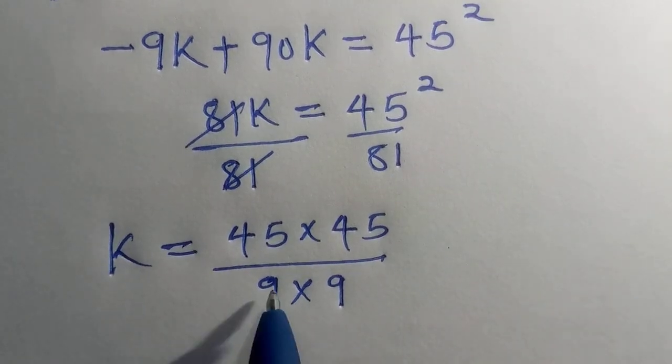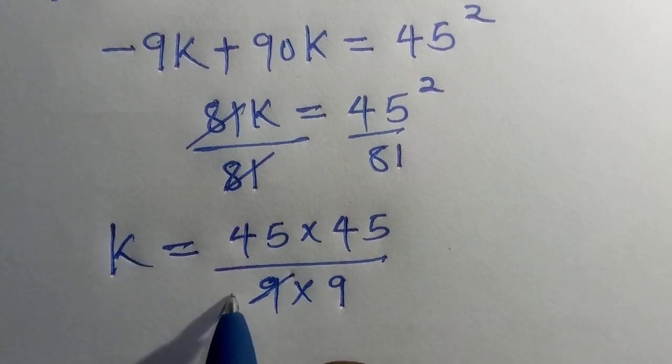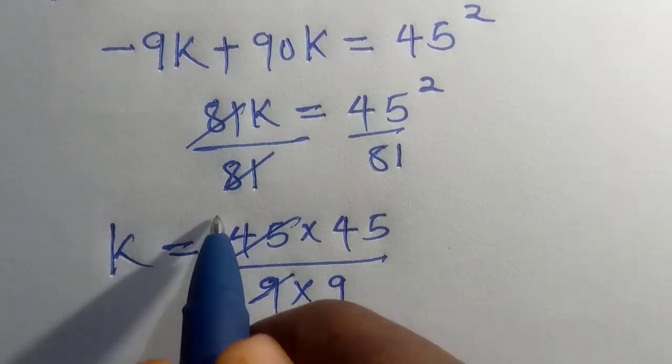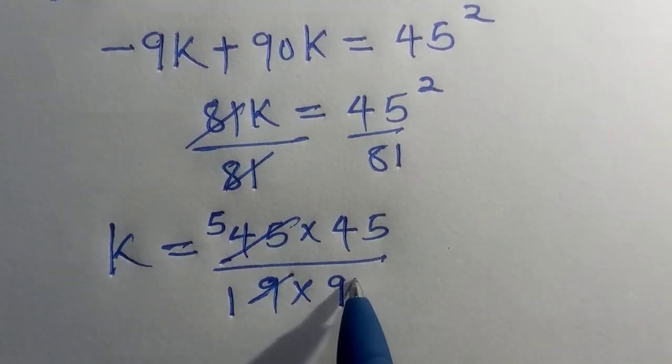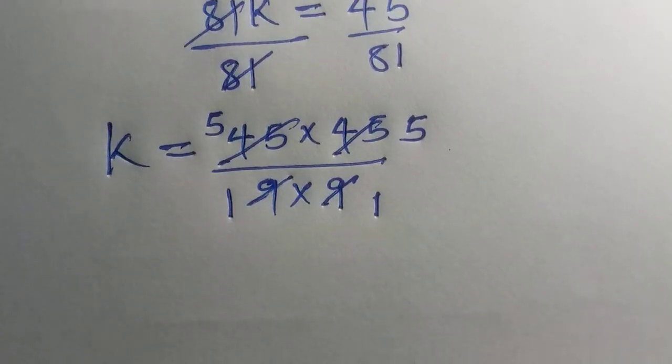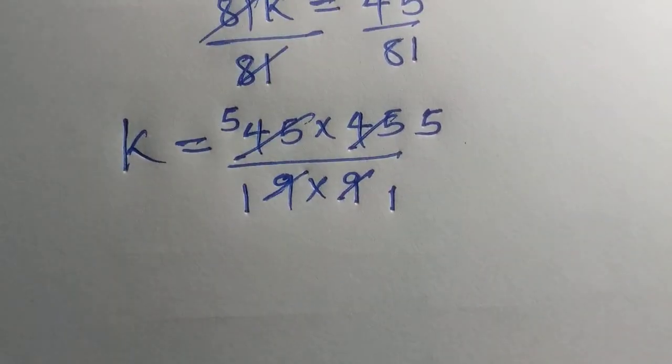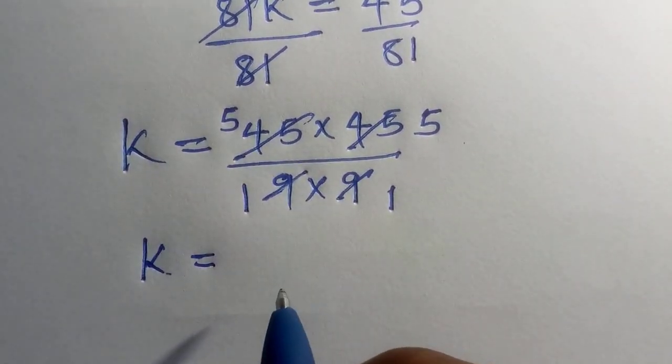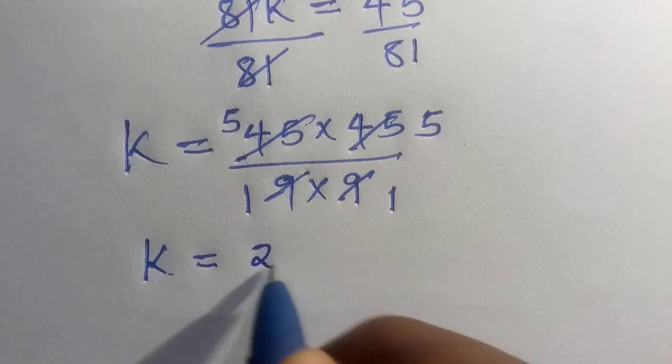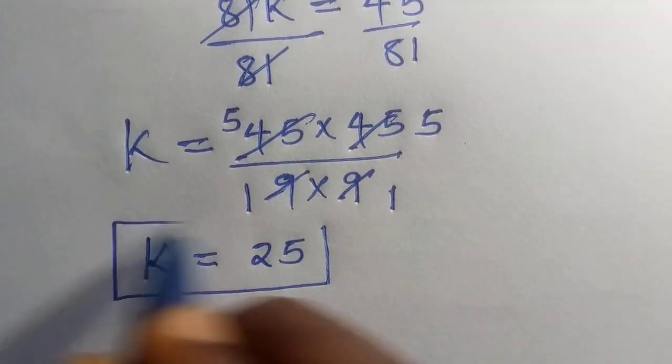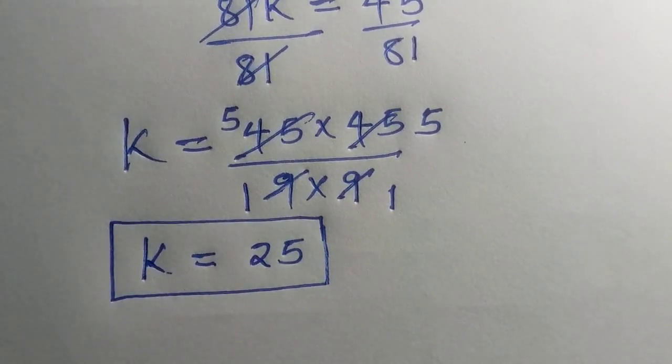So, here we say 9 in 9, that is 1, and 9 in 45, that gives us 5. Again, 9 here 1, 9 in 45, it gives us 5. Therefore, at the numerator, we have k equals 5 multiplied by 5 is 25. And here is the value of k for this problem.